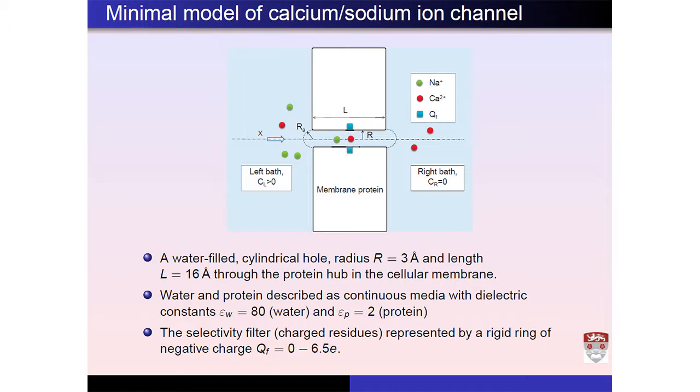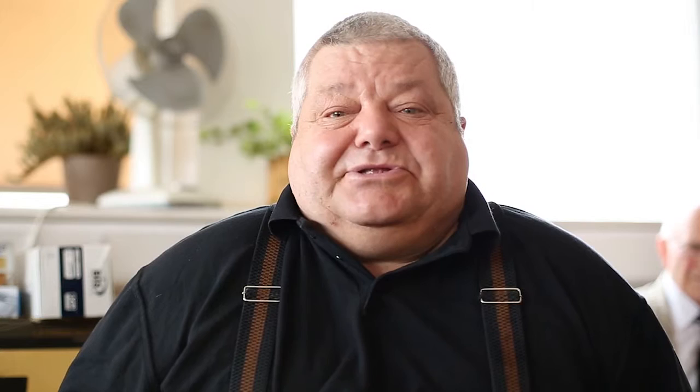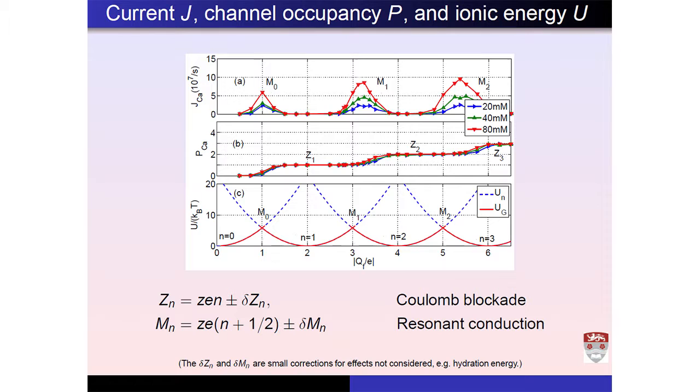This was an insight due to Igor Kaufman. An ion channel is a very complicated object containing thousands of atoms. We claim that its conduction and selectivity can be explained by a simple electrostatic model, similar to quantum dots. We consider a simple model of an ion channel represented as a water-filled hole in a protein wall. We show in the paper that an ion channel has zero conduction — which is Coulomb blockade — at the points where captured ions neutralize Qf.